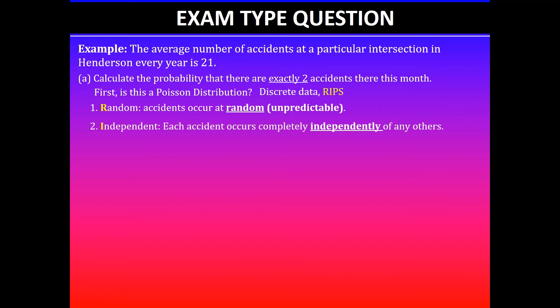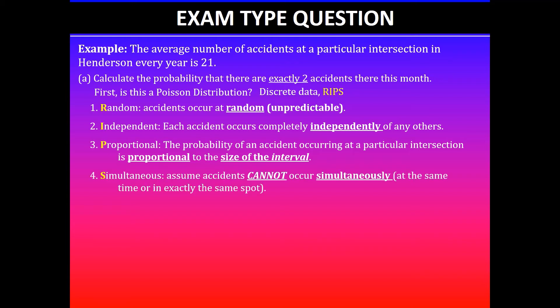And the third one: the probability of an accident occurring at a particular intersection will be proportional to the size of the interval. And we assume that accidents cannot occur simultaneously at the same time or in exactly the same spot. So that's our assumption.